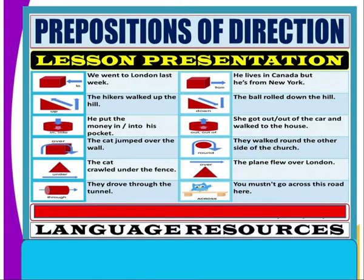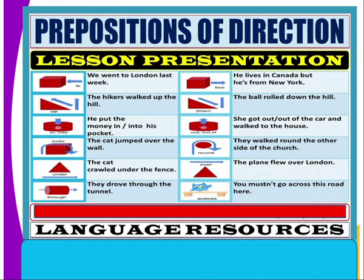'They drove through the tunnel' — 'through,' as pointed by the arrow. 'He lives in Canada but he's also from New York' — 'from' is a preposition of direction. 'The ball rolled down the hill' — 'down' is a preposition of direction. 'She got out of the car and walked to the house' — 'out of' is a preposition of direction. 'They walked around the other side of the church' — as shown by the arrow. 'The plane flew over London' — 'over' is a preposition of direction.